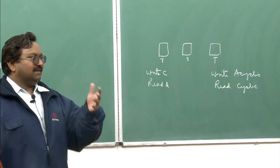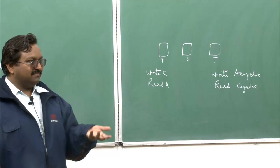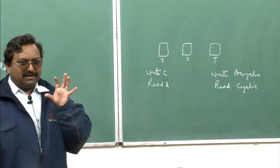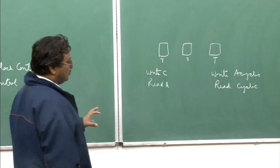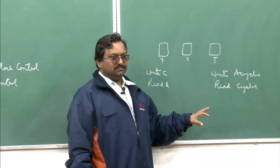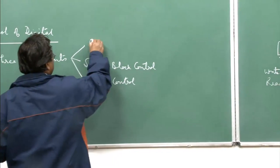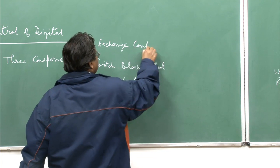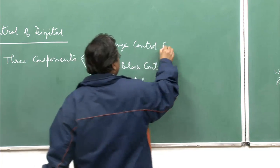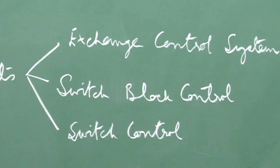Switch block control has to be given information by somebody who is looking at the destination address and how the call has to be set up. Based on that, it will do some kind of routing calculation to determine to whom it has to be forwarded. The most intelligent software entity running in the system has to talk to switch block control. That particular control is known as the exchange control system.